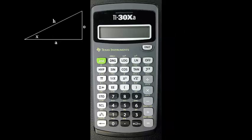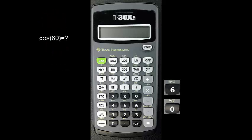The cosine function finds the ratio of side A to side H. Let's calculate the cosine for the angle 60 degrees. Enter 6, 0, and press the cosine button. The answer 0.5 should be displayed.